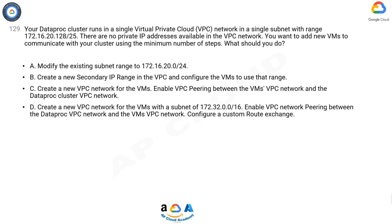Question 129. Your Dataproc cluster runs in a single VPC network in a single subnet with range 172.16.20.128/25. There are no private IP addresses available in the VPC network. You want to add new VMs to communicate with your cluster using the minimum number of steps. What should you do? A: Modify the existing subnet range to 172.16.20.0/24.